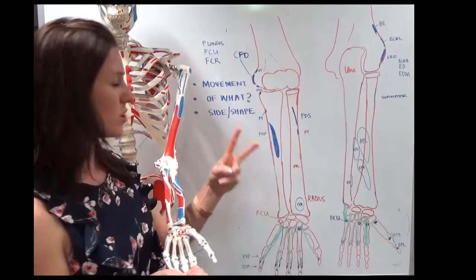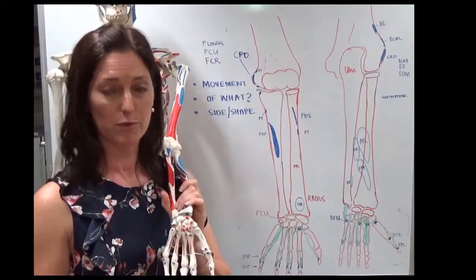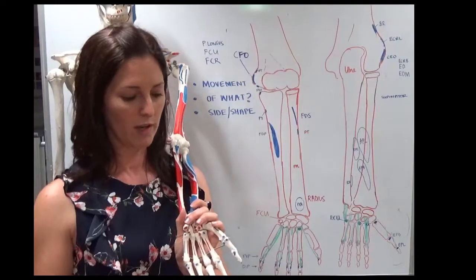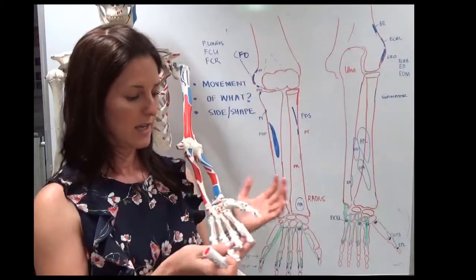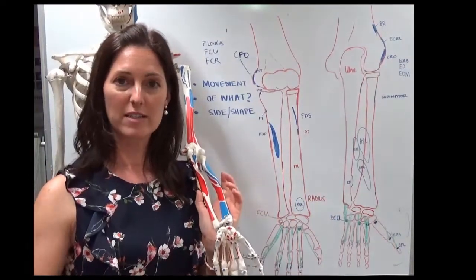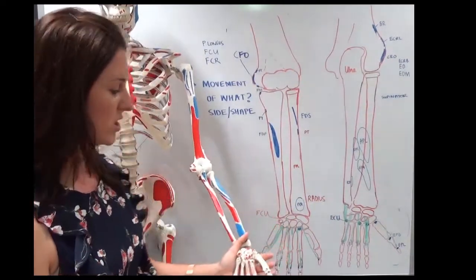And then finally, if there was two of them, they'd have to decide, will we name it after the shape or the length? So if it's longer, we'll call it the longus, if it's shorter, we'll call it brevis. If it's deep, we'll call it profundus, and if it's superficial, we'll call it superficialis.